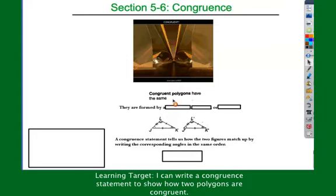When I have two objects that are congruent, essentially what we're saying is that they have the same size and shape. Go ahead and write that down.